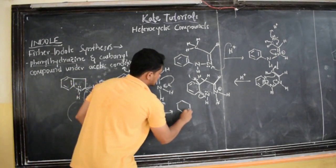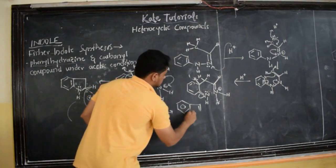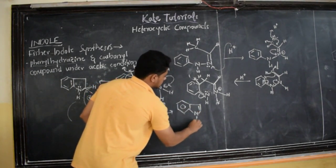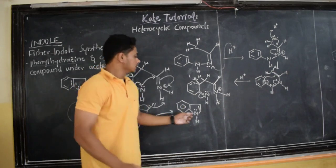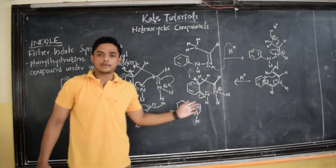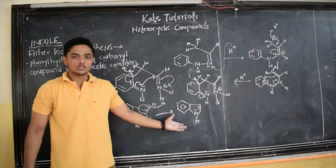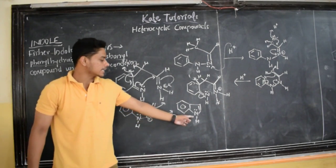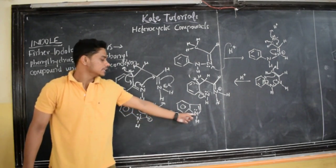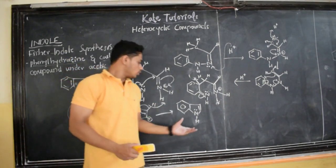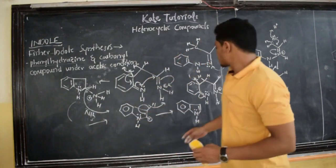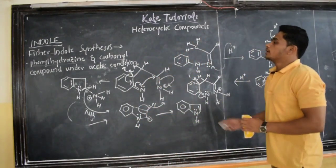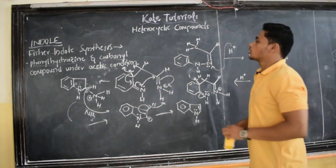This is the indole produced by Fischer Indole Synthesis. Indole has 6 π electrons in one ring and altogether 10 π electrons total, so it is aromatic. It is also heterocyclic because it contains a heteroatom — nitrogen — in the ring.